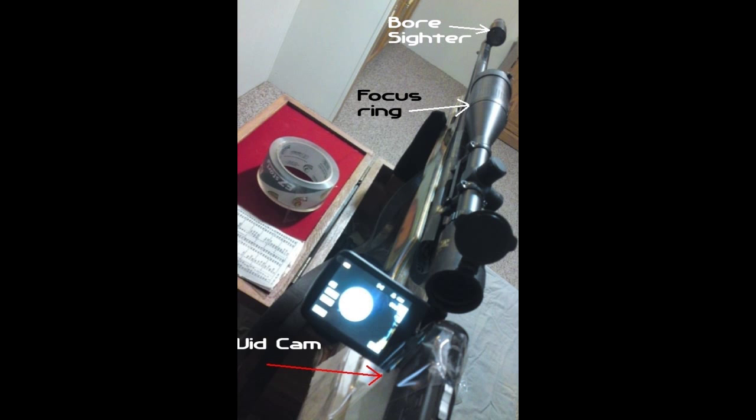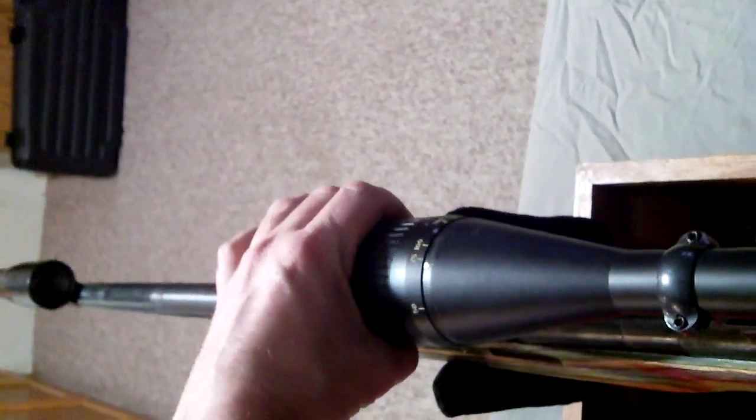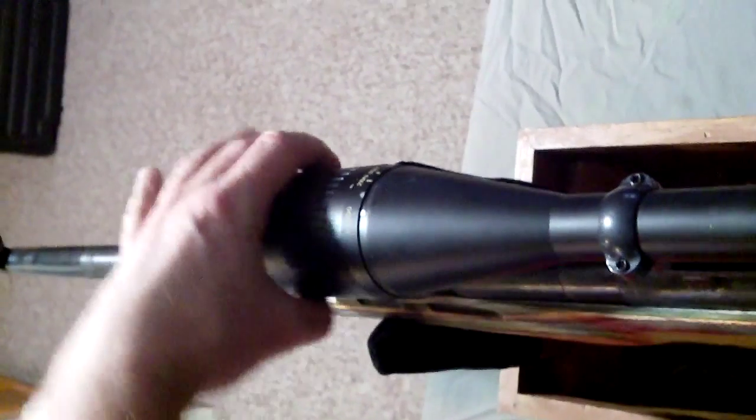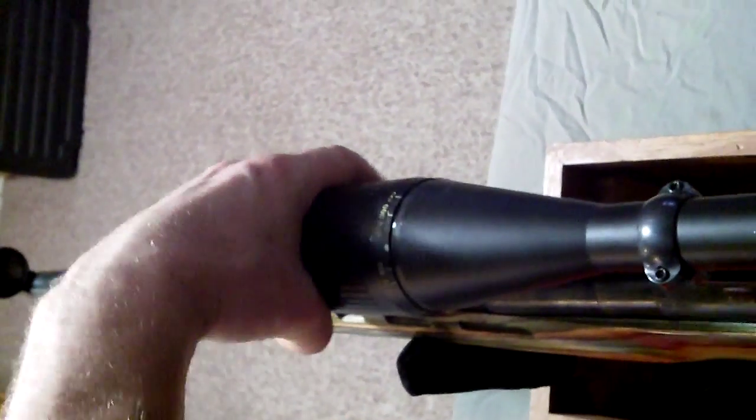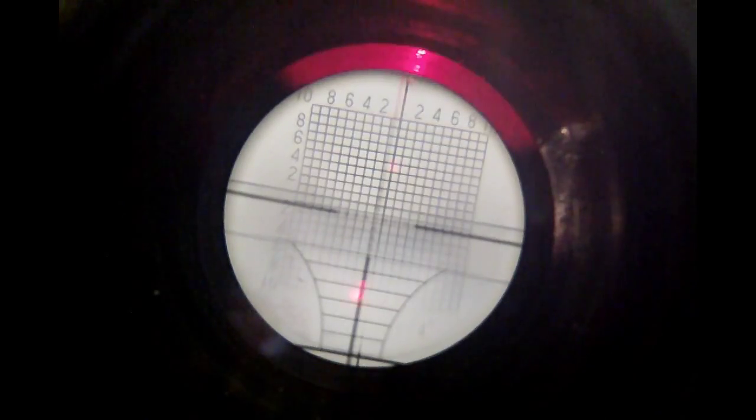This is my hand in front of the scope and then you can see the grid in the background is the target. Imagine that as the target. All I'm going to do is turn the focus adjuster on the very end of the scope where it's got graduations from I think 25 yards, 100 yards, 300 on up to infinity. I'm just going to turn the focus.